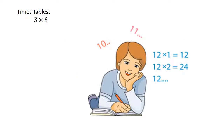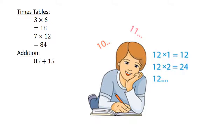3 times 6 equals 18. 7 times 12 equals 84. Addition: 85 plus 15 equals 100.